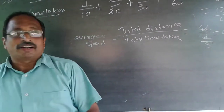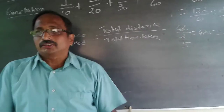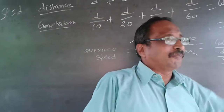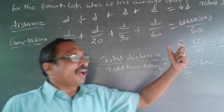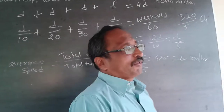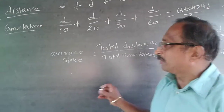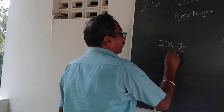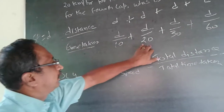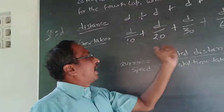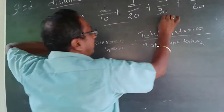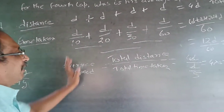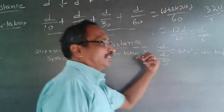You can also use the harmonic mean for four different speeds, but it is complicated to remember those formulas. There is also a formula for two speeds: 2XY ÷ (X + Y). You can apply it in pairs — first two speeds, then the next two, then combine — but the method shown here is the fastest way.